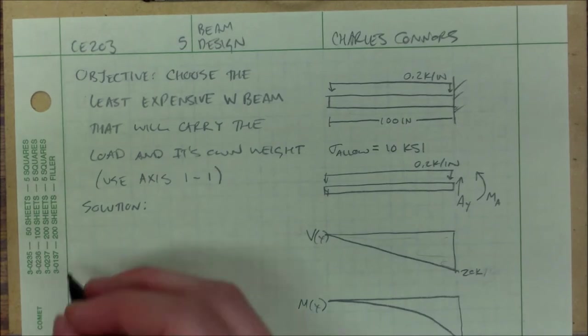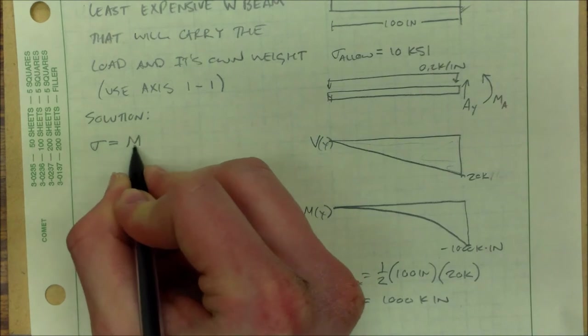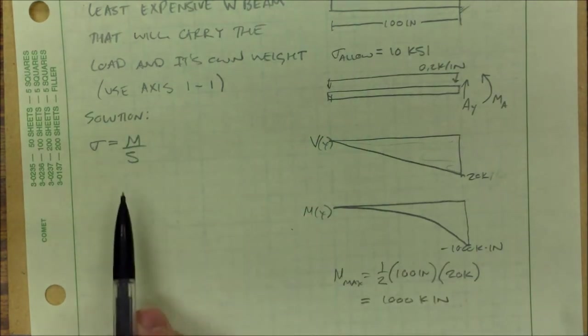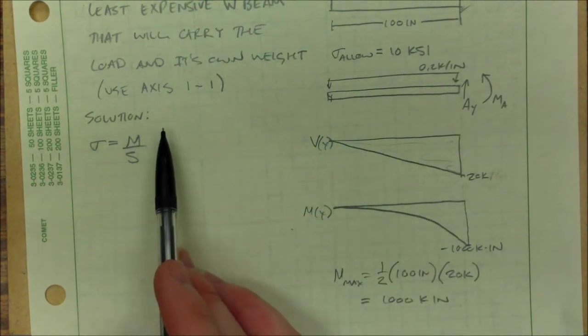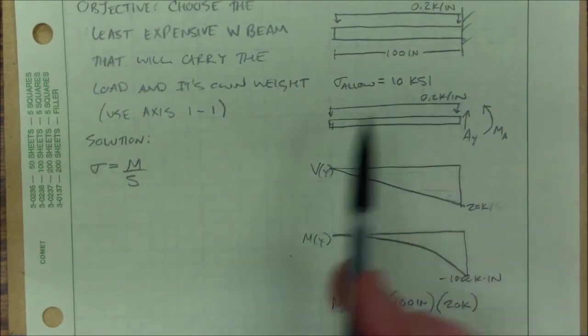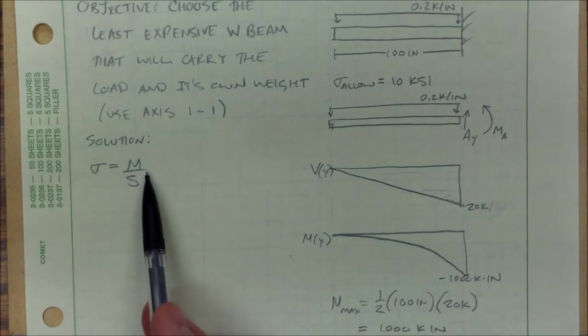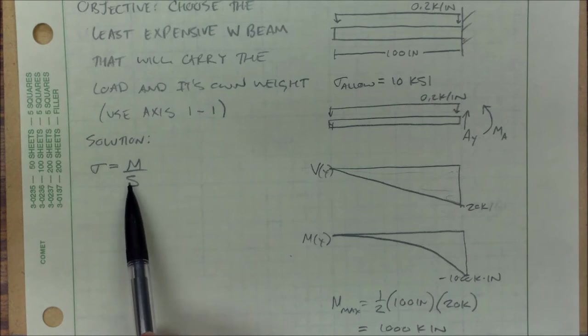Alright, so now I have my max moment, which means I can look at this equation in order to solve for... I was given the allowable stress. I found the max moment, and I need to be comparing the section modulus of different beams. That's how I'm going to know which one is best.